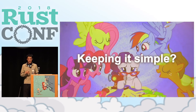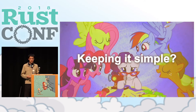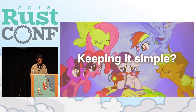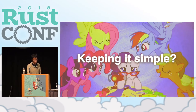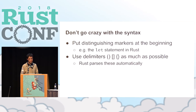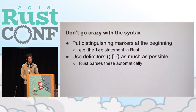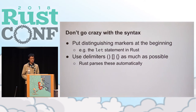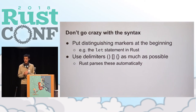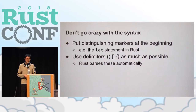Another problem I had with developing Maud was keeping the library simple and well-scoped, because it was largely a one-man job. One way I managed this complexity was by keeping the syntax really simple. In particular, I put distinguishing markers at the beginning of every expression within that syntax.